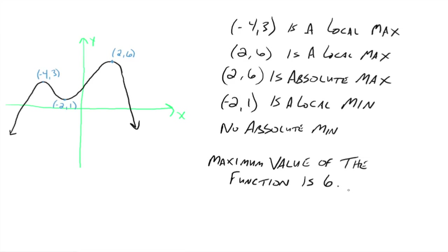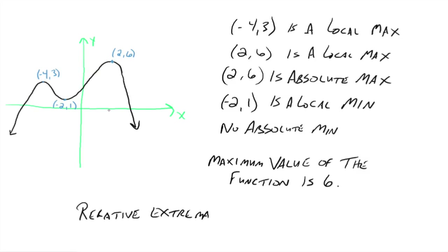One other thing: we're referring to negative 4, 3 and 2, 6 as local max, and negative 2, 1 as a local min. Another word you might see in some textbooks is 'relative max' or 'relative min.' Relative extrema is just another way to say local extrema — local and relative mean the same thing.